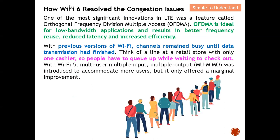Now we will understand how Wi-Fi 6 actually resolves the congestion issue. One of the most significant innovations in LTE was a feature called OFDMA. OFDMA is ideal for low-bandwidth applications — it results in better frequency reuse, reduces latency, and increases efficiency. With the previous version of Wi-Fi like Wi-Fi 5, the channel remains busy until data transmission had finished. Think of a line at a retail store with only one cashier — everyone needs to queue up while waiting to check out. Wi-Fi 5 uses MU-MIMO — Multiple User, Multiple Input, Multiple Output.